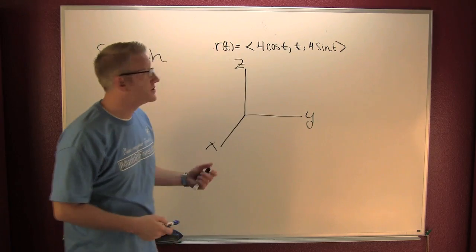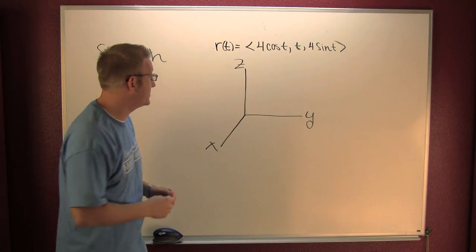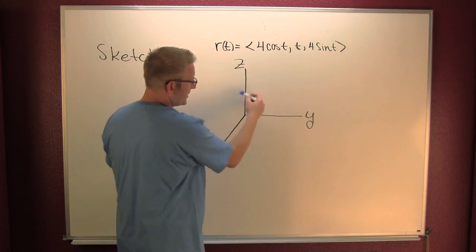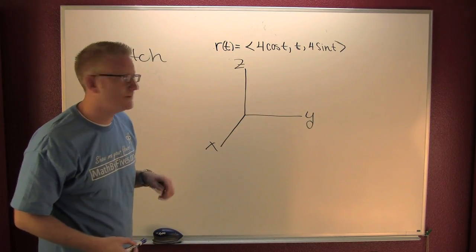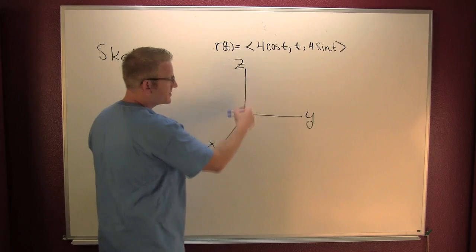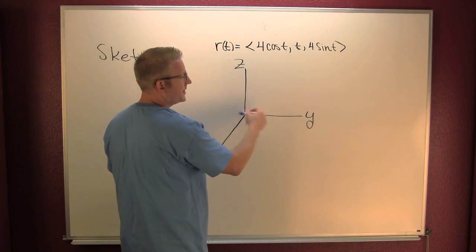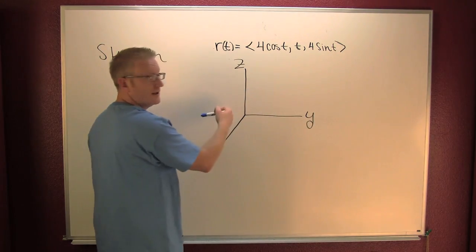Sure. Whose radius is 4. So in my xz I have a circle. That's right here. What do you notice in our y coordinate? That sucker's linear, huh? Sure. So we have a circle in our xz and then it's going to go linearly on y.